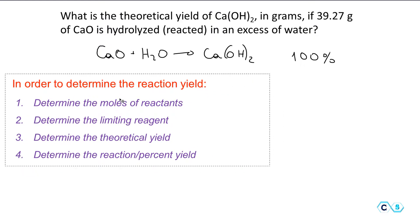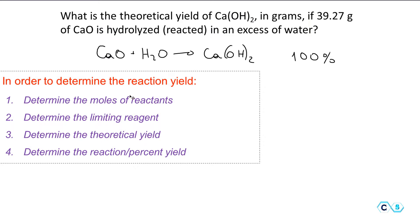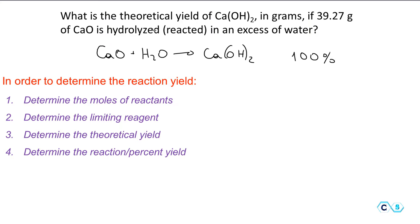Generally, in order to determine the percent yield or theoretical yield of the reaction, you can follow these steps. First, determine the moles of the reactants, because without knowing the moles we cannot do any calculations. Then we need to determine the limiting reactant, which determines how much product will be formed. After that, we can calculate the theoretical yield and percent yield if needed.